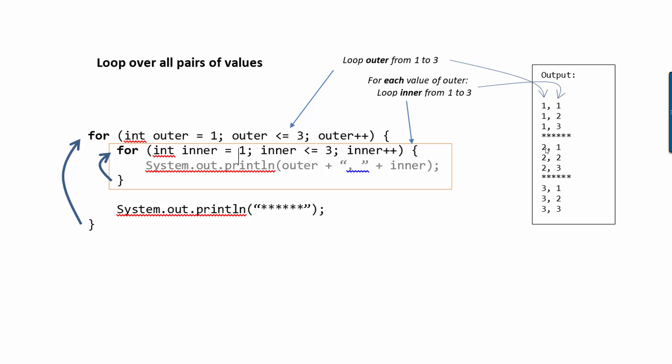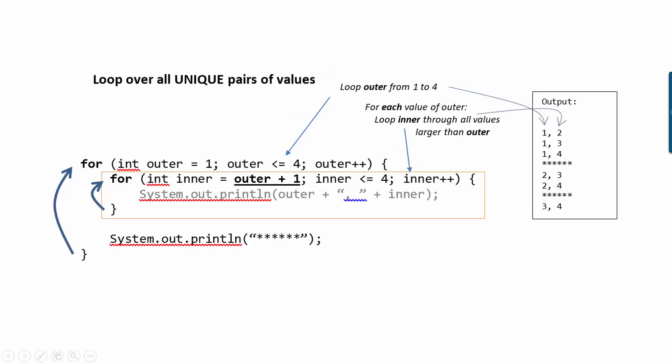So what if you don't want to have repeats of your pairs like that? What if you only want pairs of unique numbers? You could do this. You could say, let's loop outer from one up to four. And let's start inner at one larger than whatever outer is. So an easy way to think about that is, let's loop outer through all of our numbers. And then let's loop inner through all values that are larger than outer.